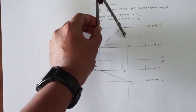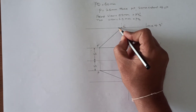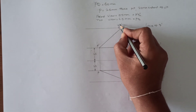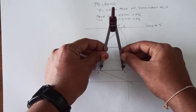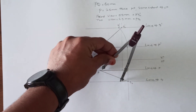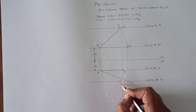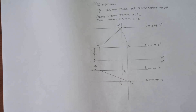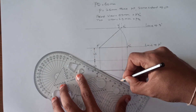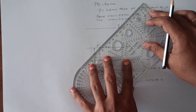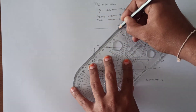Take P' as center and P'Q2' as radius, draw a curve to the locus Q'. The intersection of the curve and the locus line is marked as Q'. Similarly, take P as center and PQ1' as radius, draw a curve to the locus Q. The intersection of that curve and locus Q is marked as Q. Finally, to obtain the front view and top view, connect point P' with Q' and P with Q. The line P'Q' will be the front view of the given line and the line PQ will be the top view.